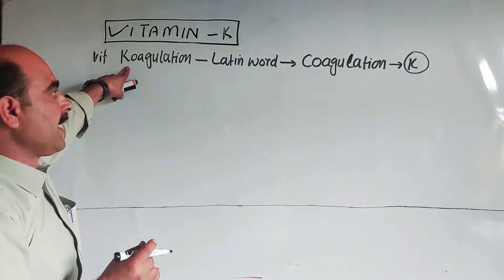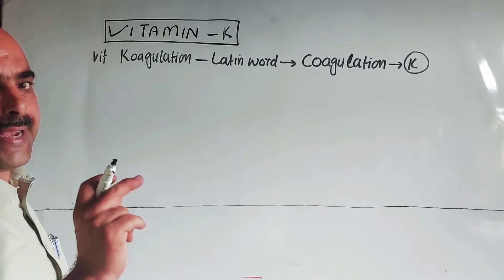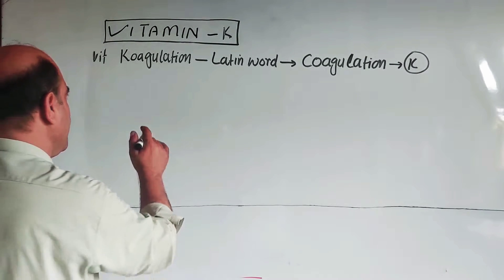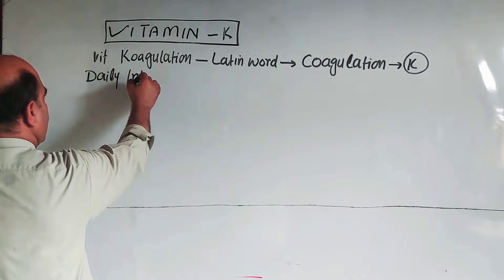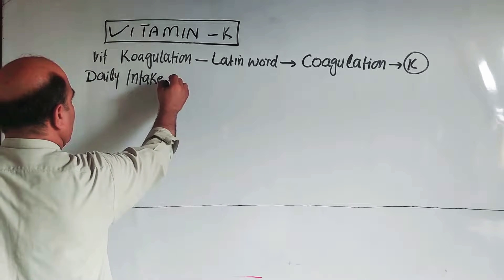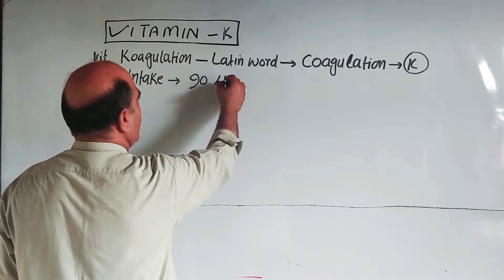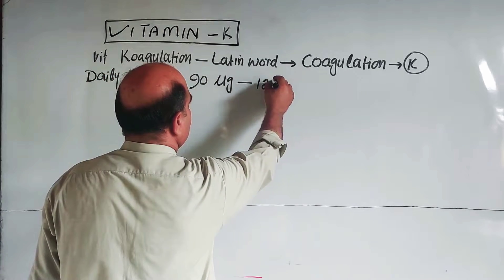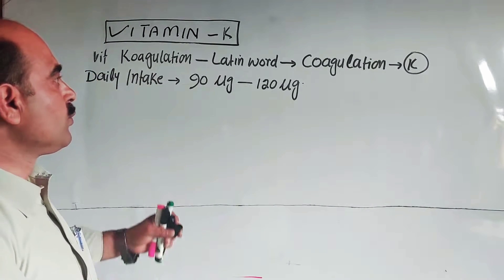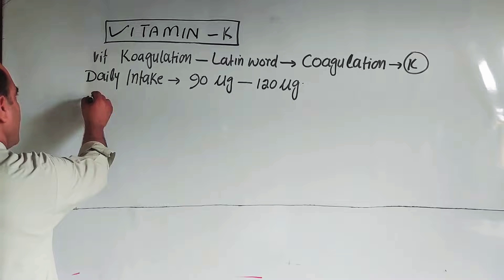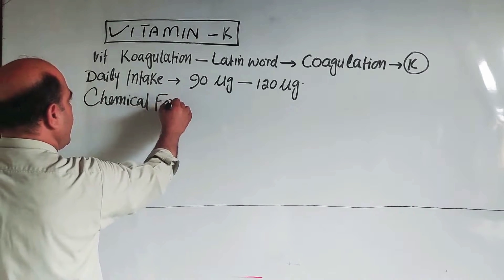The daily intake of Vitamin K for the body is 90 to 120 micrograms per day. Now let's study the chemical formula of Vitamin K — what is the chemical formula of Vitamin K?